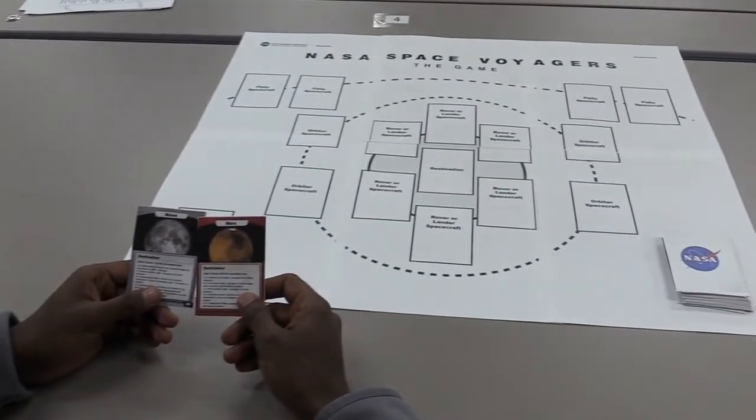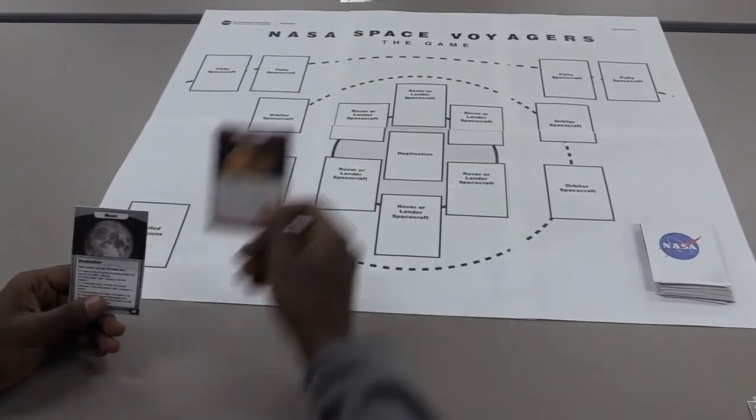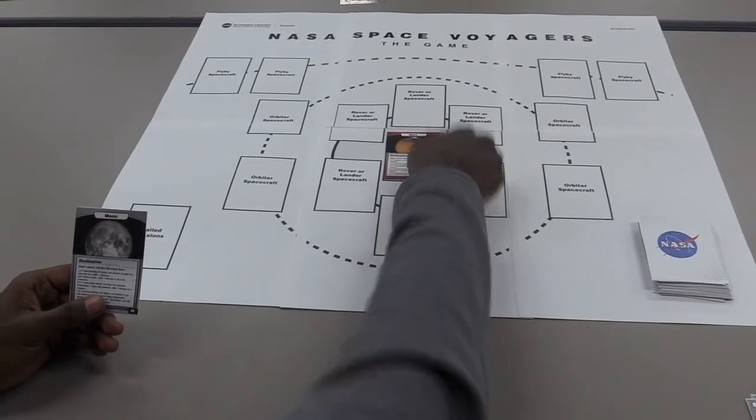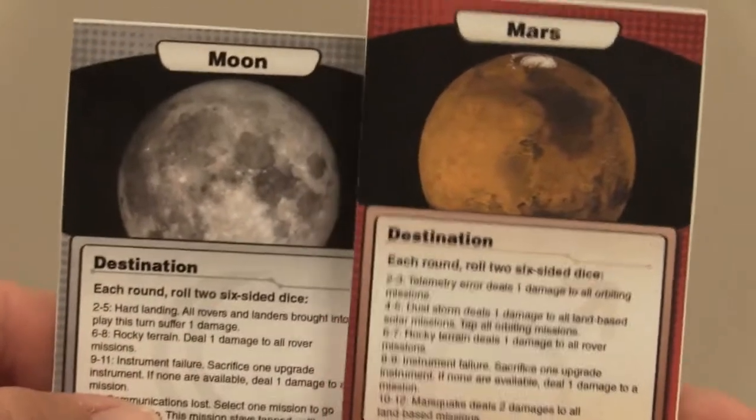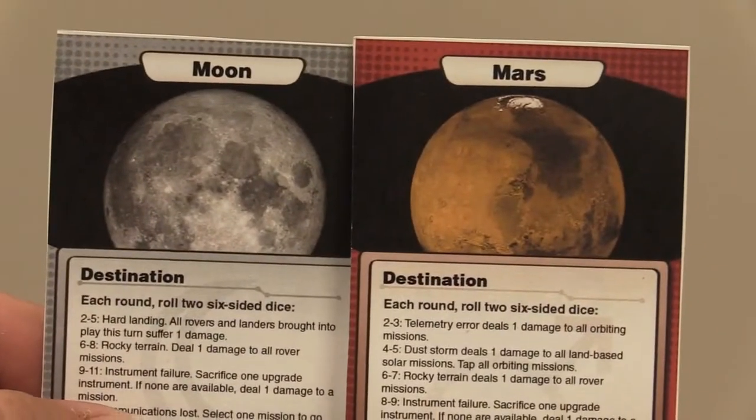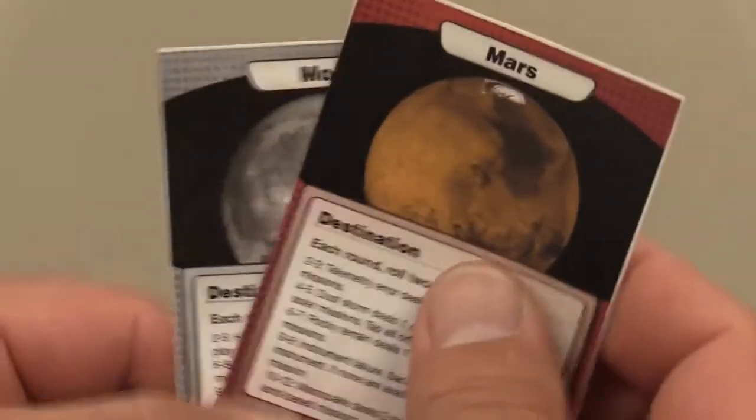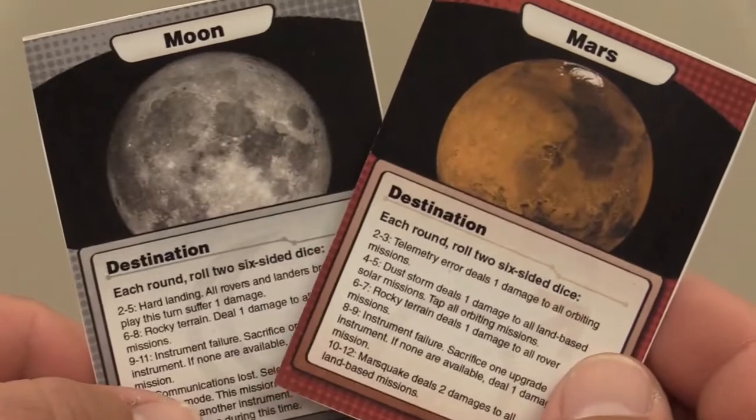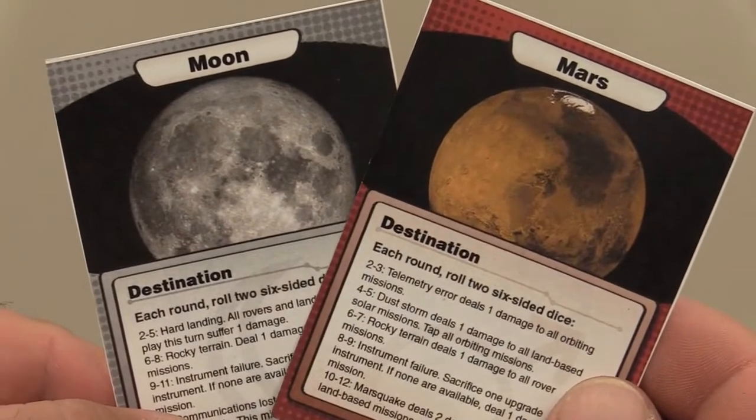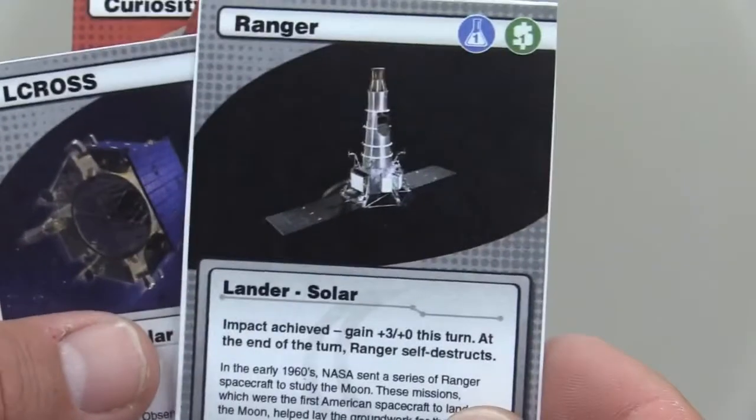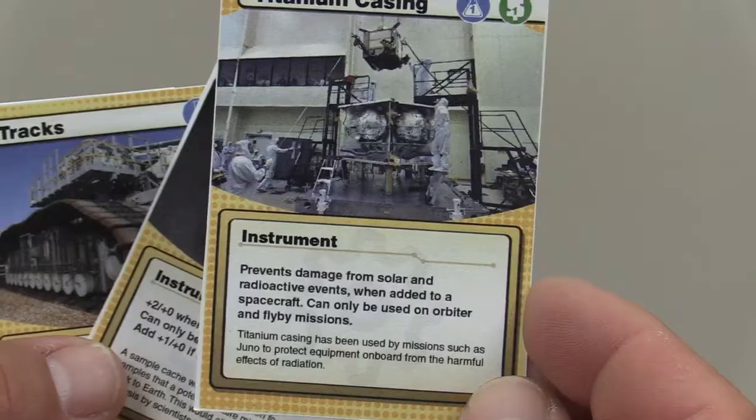Before starting the game, choose the destination you would like to explore and place that card in the middle of the game mat or somewhere visible for quick reference. Remember, each destination has different challenges that the spacecraft must overcome. Players should familiarize themselves with their destination and be strategic about the kinds of spacecraft, power sources, and instruments they use.